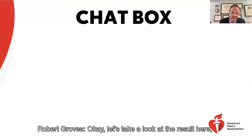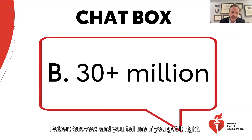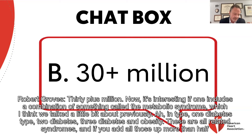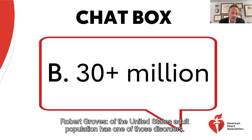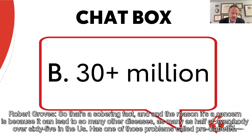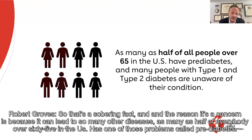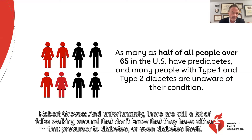The answer is 30 plus million. It's interesting — if one includes a combination of metabolic syndrome, type 1 diabetes, type 2 diabetes, pre-diabetes, and obesity, these are all related syndromes. If you add all those up, more than half of the United States adult population has one of those disorders. That's a sobering fact, and the reason it's a concern is because it can lead to so many other diseases. As many as half of everybody over 65 in the U.S. has one of those problems called pre-diabetes. There are still a lot of folks walking around that don't know they have either that precursor to diabetes or even diabetes itself.